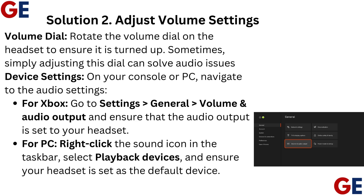On your console or PC, navigate to the audio settings. For Xbox, go to Settings, General, Volume and Audio Output, and ensure that the audio output is set to your headset. For PC, right-click the sound icon in the taskbar, select Playback Devices, and ensure your headset is set as the default device.